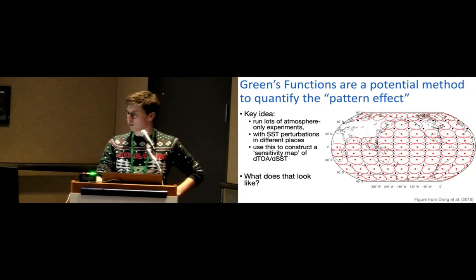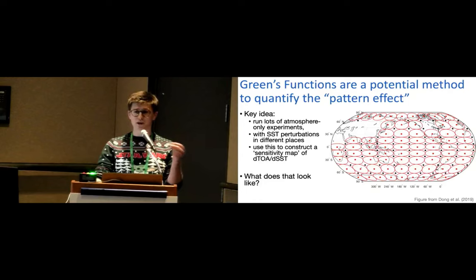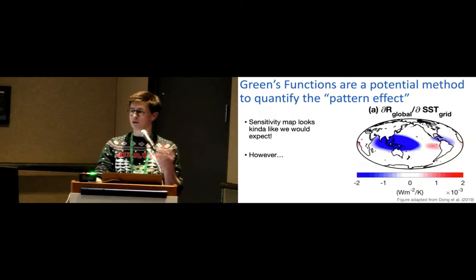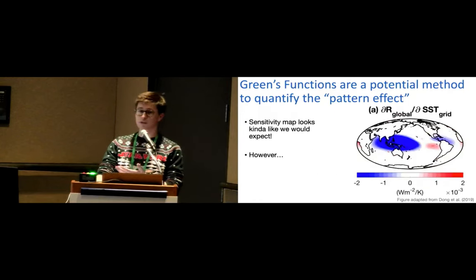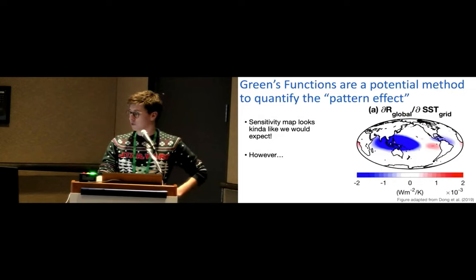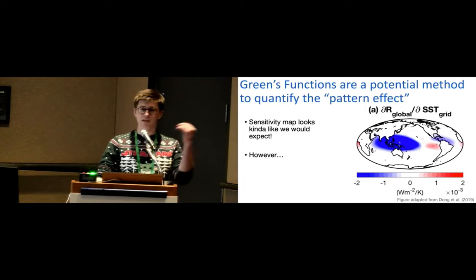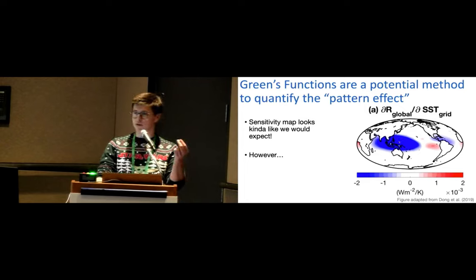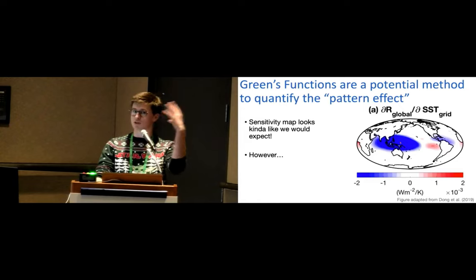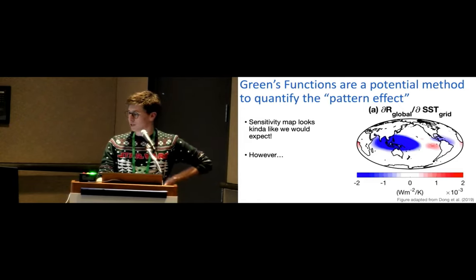And then you do these kind of SST perturbations in loads of different regions, calculate the change in TOA for each of those experiments, and then you can construct a map like this, which is called the greens function, which basically is a way of quantifying the expected change in global mean TOA for a change in SST at each location. So this is saying that when you warm in the Western Pacific, you expect a negative impact on the TOA flux because of what we just saw, this change in the inversion in low clouds, versus when you warm in the Eastern Pacific, it's a positive influence on the TOA. It's a warming impact.